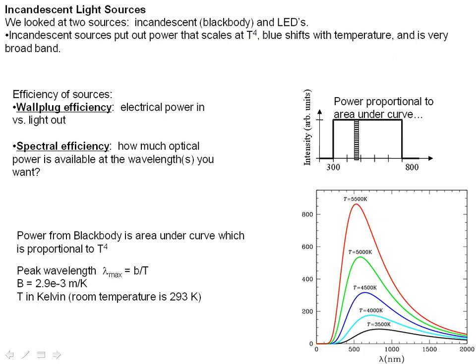Let's look at incandescent light sources. We're going to look at two sources: incandescent blackbody and LEDs. Incandescent sources are more typically known as blackbody sources. I'm not going to go into all the details of why they're called blackbody. This is a historical thing that you probably studied in one of your physics classes at some point.